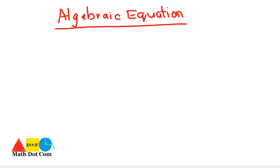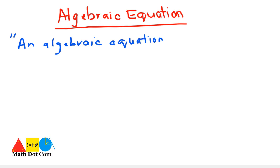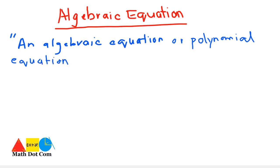We will start from the definition of an algebraic equation. An algebraic equation is also called a polynomial equation. A polynomial equation is an open mathematical statement.